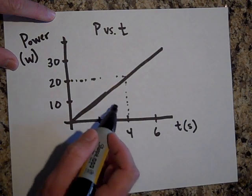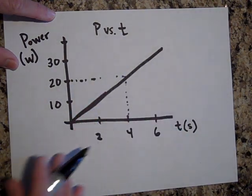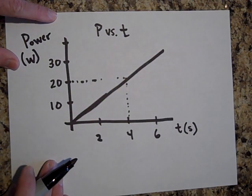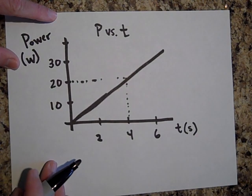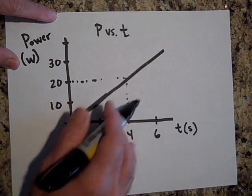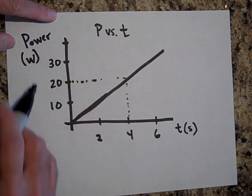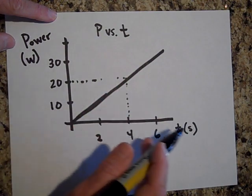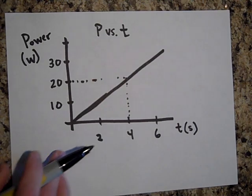Now do you know what this area is equal to? The area underneath this graph, like so many graphs, the slope and the area mean something. In this graph, the area means something. Let's see, we got watts over seconds. Let's go back here for a quick second.